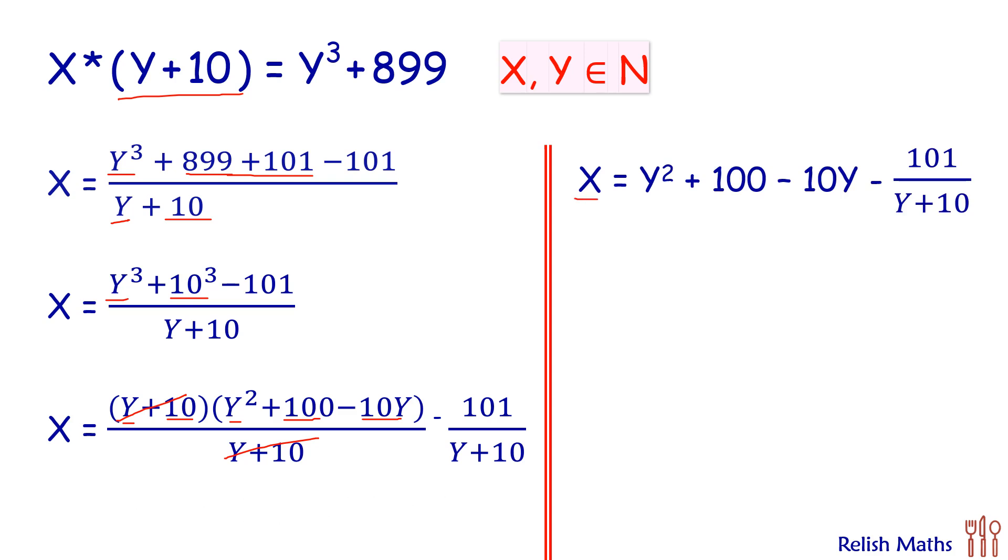Now X is a natural number, Y is also a natural number. This full value will give me an integral answer. For X to be integer, besides this, the green part should be an integer.